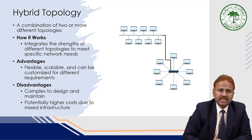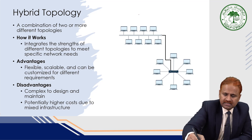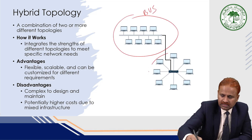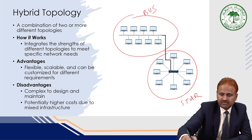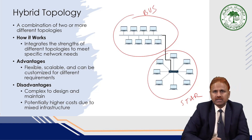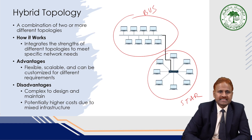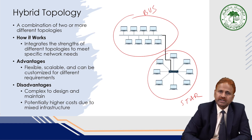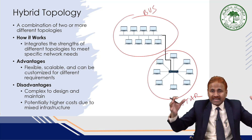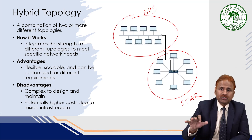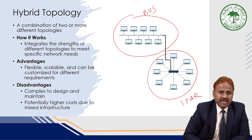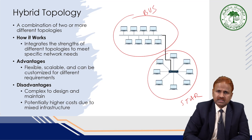Depending on your requirement, a hybrid topology can be used — a combination of two or more different kinds of topology. For example, one part of the network may use bus topology and another part may use star topology, with the two switches connected to each other. The advantage is that it is flexible, scalable, and can be customized. The disadvantage is that it is complex to design and maintain, with potentially higher cost due to mixed infrastructure.